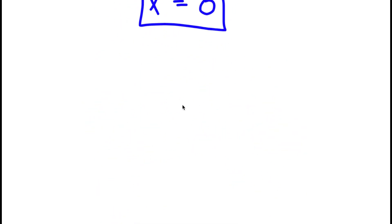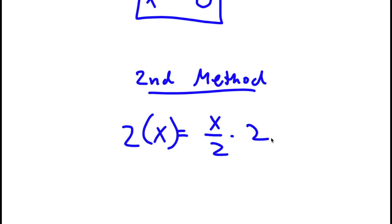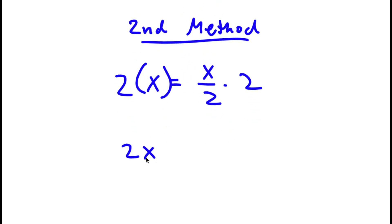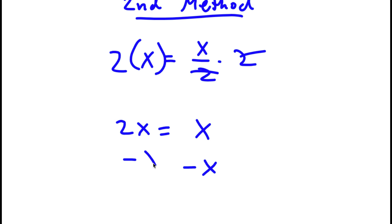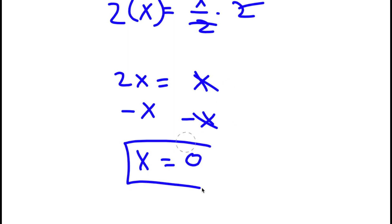I actually have a second method of solving this problem. Again, I start with x is equal to x over 2, but this time, instead of subtracting x over 2 on both sides, I'm going to multiply by 2 on both sides. So I have 2 times x is equal to x over 2 times 2. 2x equals x. Now I subtract x on both sides — these two cancel — leaving 2x minus x, which is x, equal to 0. So x equals 0 again.